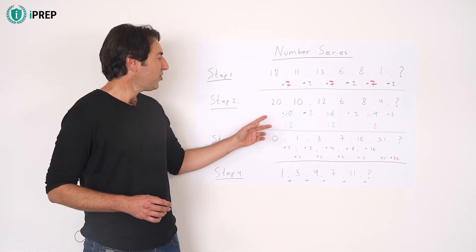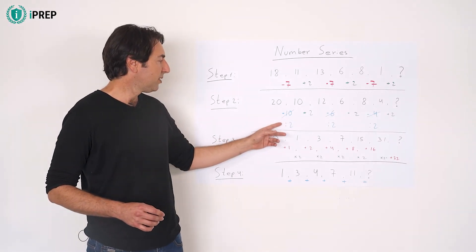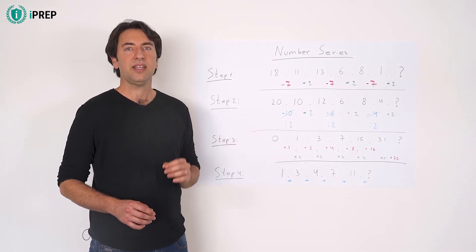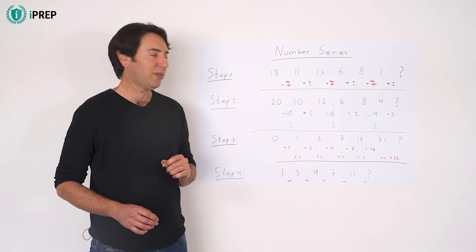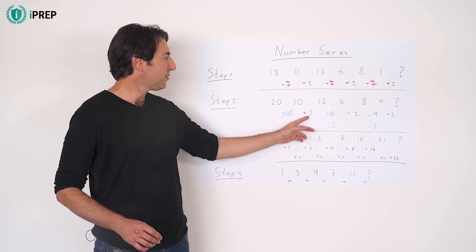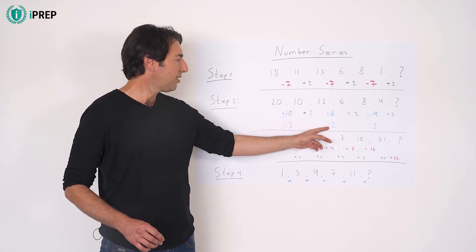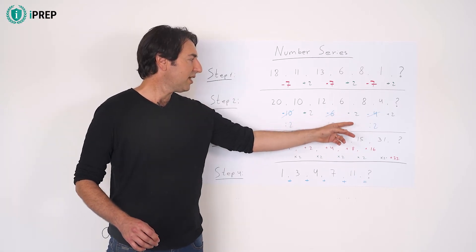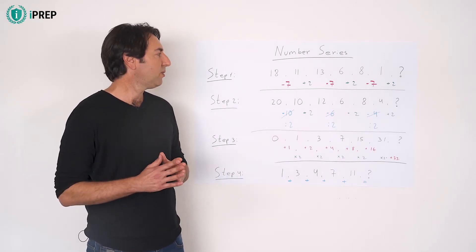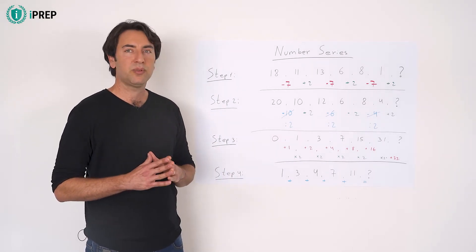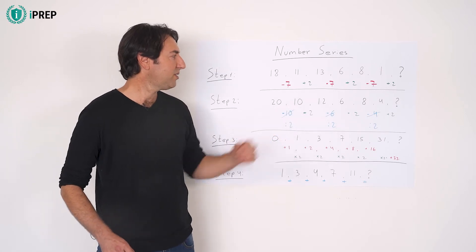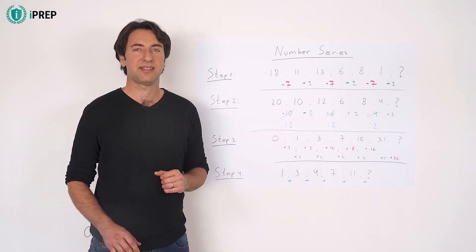But if you change the minuses to divided by 2, then it reveals the pattern. You have divided by 2, plus 2, divided by 2, plus 2, divided by 2, plus 2. Therefore, the next number will probably be 6, as 4 plus 2 equals 6.